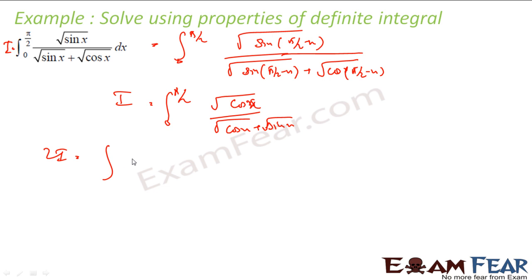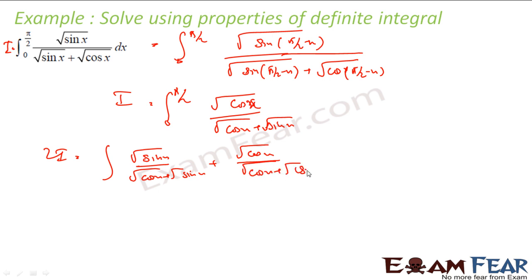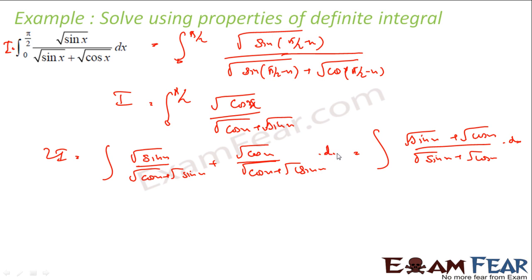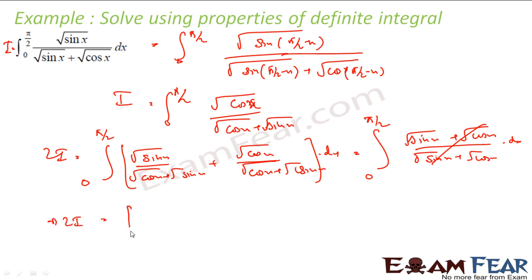So if you add these two expressions, 2I is nothing but the integral of [√(sin x) / (√(cos x) + √(sin x))] + [√(cos x) / (√(cos x) + √(sin x))], which equals the integral of (√(sin x) + √(cos x)) / (√(sin x) + √(cos x)) dx. This simplifies to 1, so 2I equals the integral of 1 dx from 0 to π/2, which is just x evaluated from 0 to π/2.